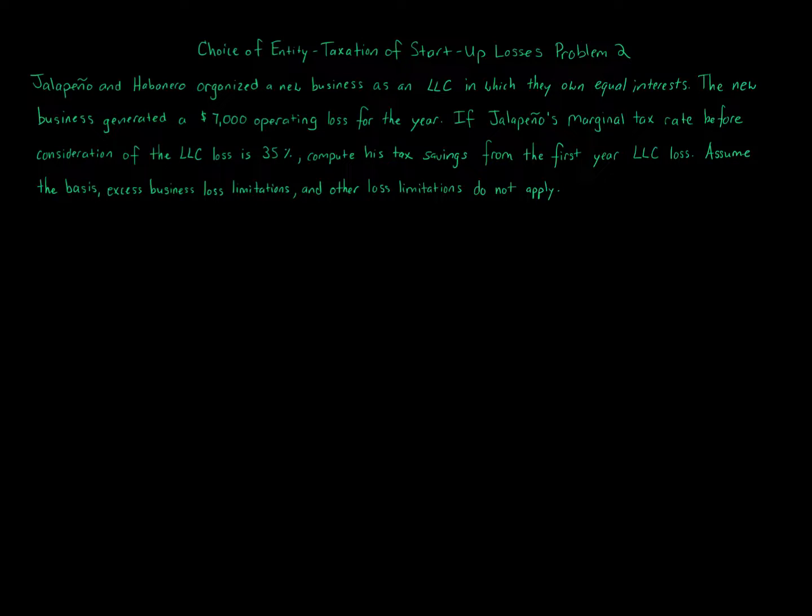So we've got two partners, and it's an LLC. If you have two members in an LLC where you have more than one owner, the default rule unless you're told otherwise in the problem is that it's going to be treated as a partnership. So we use a triangle to denote partnership. That LLC is owned by Jalapeno, which is an individual, I'm just going to put J for Jalapeno, and then we've got Habanero, which is the other individual. Both own 50%, they both own 50% of the LLC.